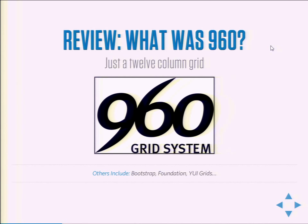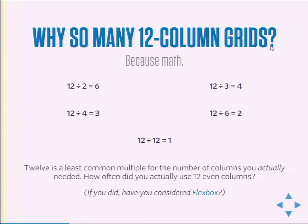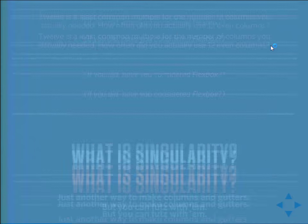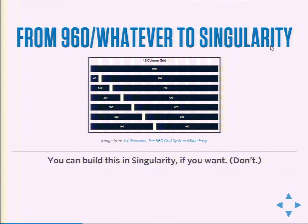A quick review: what was 960? It was a simple 12-column grid system. Others include Bootstrap, Foundation, and YUI grids. There are all these 12-column grid systems because it made math easy — with one system you could make a two-, three-, four-, or six-column grid. But very rarely did you actually ever need all 12 columns. And if you did, I implore you to investigate Flexbox. Singularity is another way to create columns and gutters, built on the same principles, but you can change the sizes of things in convenient ways and have Sass do all the math for you.